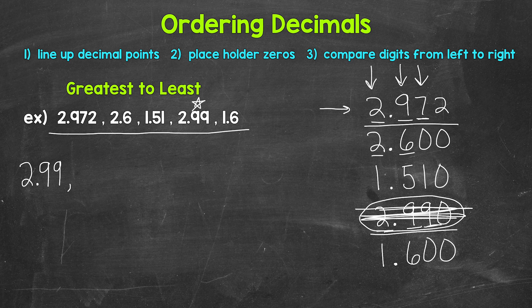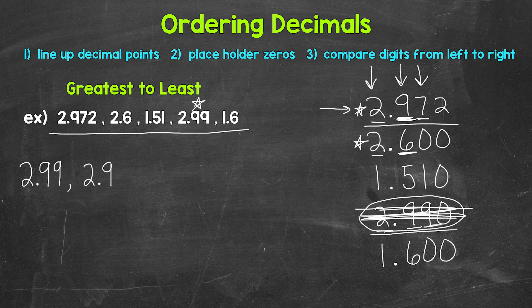Now back to what we have remaining. We start the process over. In the ones place we have a 2, a 2, a 1, and a 1. 2 is greater than 1, so we look at those two with a 2. Since both have a 2 in the ones place, we move to the tenths place — we have a 9 and a 6. 9 is greater than 6, so 2 and 972 thousandths comes next. We can also think of this as 972 thousandths compared to 600 thousandths — 972 thousandths is greater.